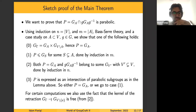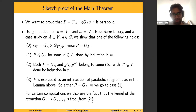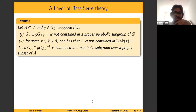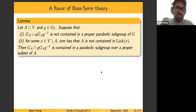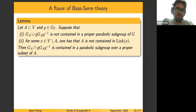Another tool we use is the kernel of a different kind of retraction — not onto one element, but onto everything except one element. This kernel is also free, coming from the same paper by Ciobanu, Paris, and Blasco. To give a geometric reduction using Bass-Serre theory: consider the parabolic G_A and a conjugate of it, and suppose their union is not contained in any proper parabolic subgroup of G. For some x outside of A, suppose A is not contained in the link of x. Then we can show that the intersection is contained in a proper parabolic subgroup over a proper subset of A.